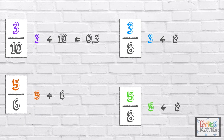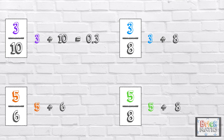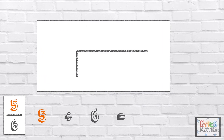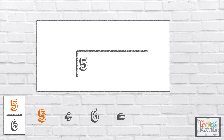Let's take a look at the next example: 5 sixths, which is 5 divided by 6. As 5 is the number being divided, 5 is the dividend. And we're dividing the number by 6, so 6 is the divisor.